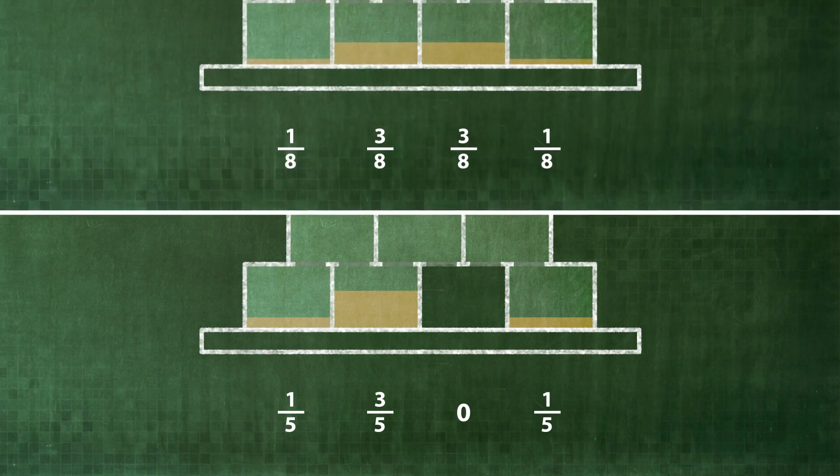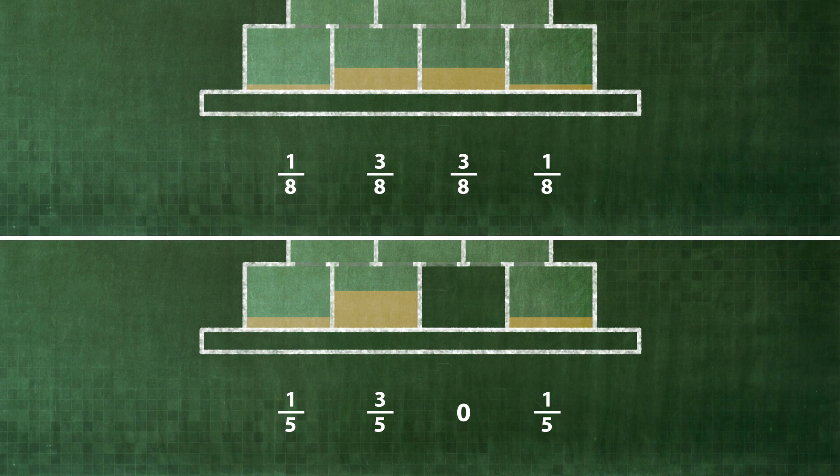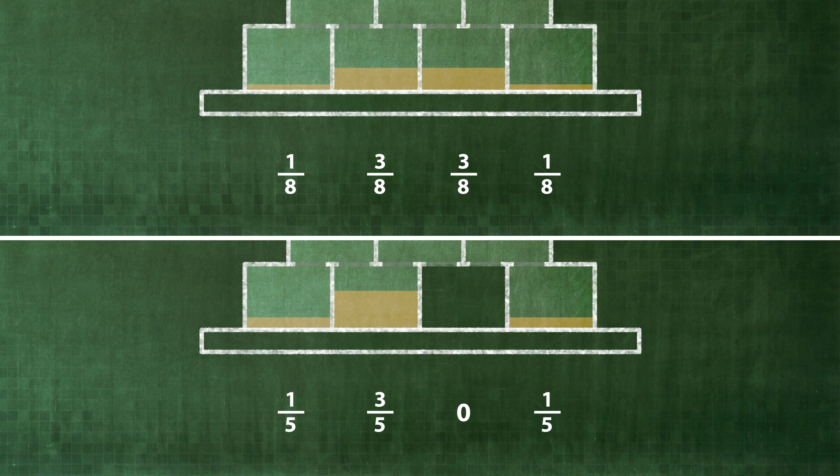Prior to measuring, the probability for this box was 3/8. After measuring, it is zero, and for the other boxes, accordingly, 1/5 or 3/5. Thus, the probability of each individual path is now 1/5.